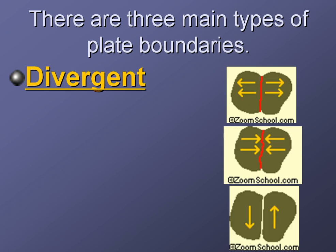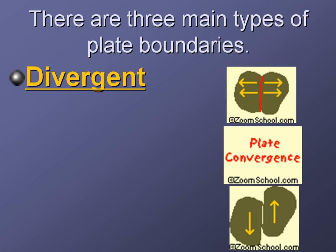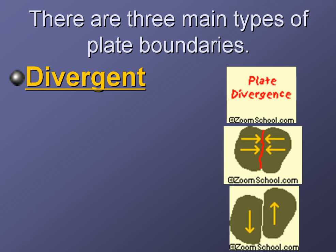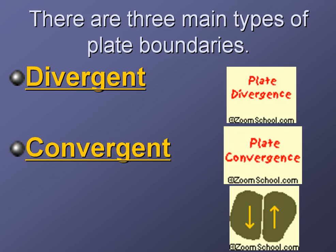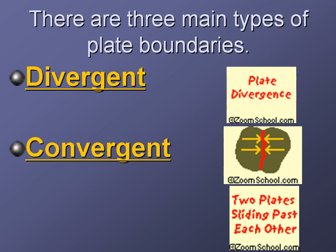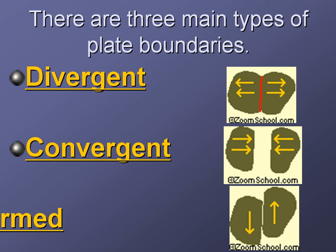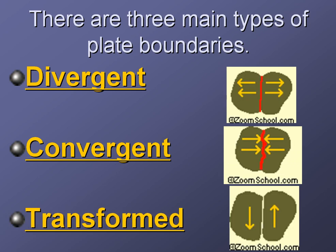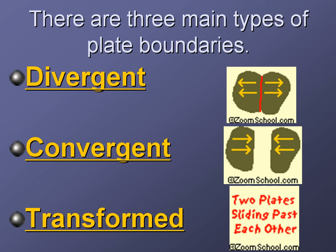There's divergent plate boundaries — think of something as dividing. If something divides, if I'm going to divide a crowd in half, I'm separating them, moving them apart. Convergent means you're coming together. And from the last picture, you probably figured out that the plates are sliding past each other, which is called a transform fault boundary.